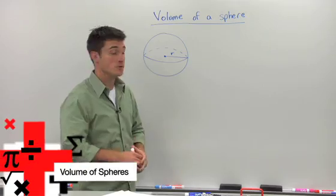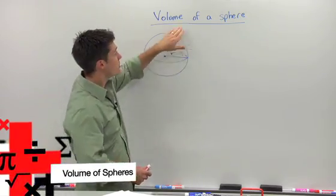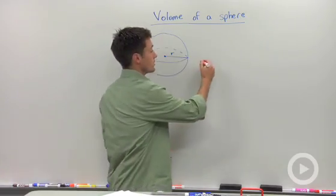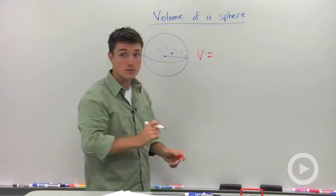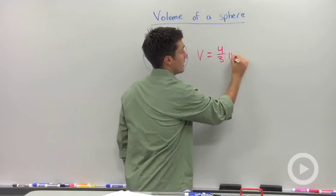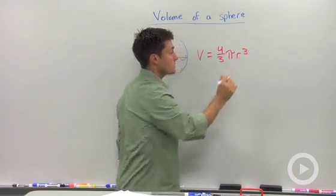If you're talking about a three-dimensional solid, that's a sphere, you can calculate its volume using the formula V equals four-thirds pi times the radius cubed.